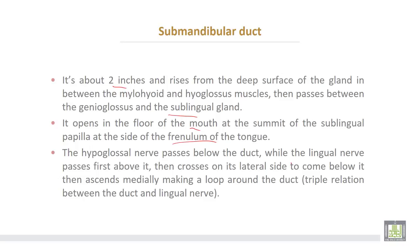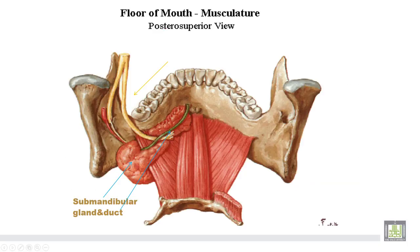The lingual nerve passes first above the duct, then crosses it from the lateral side to come below the duct again, then ascends medially making a loop around the duct of the sub-mandibular salivary gland. This is called the triple relation between the duct and the lingual nerve.